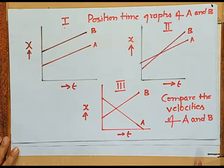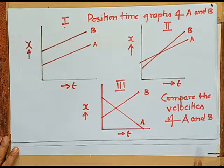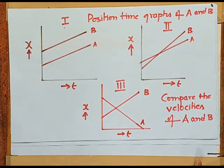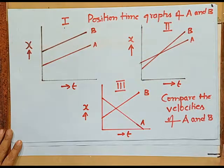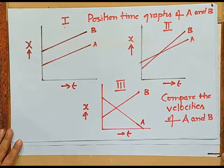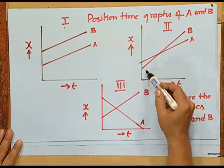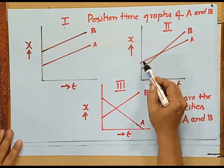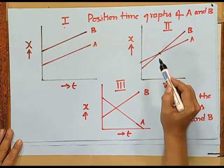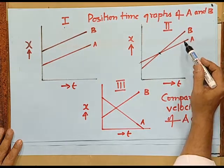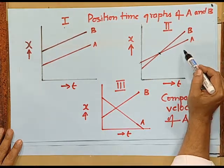Look at the position-time graphs of objects A and B in three cases. In the first case, the position-time variations of A and B are parallel lines. What do you conclude from this? In graph 2, A and B intersect at a point. What can you say about the velocity — which object has a greater velocity?